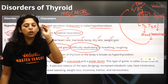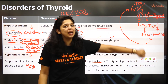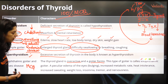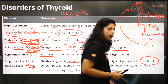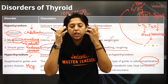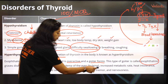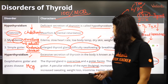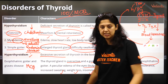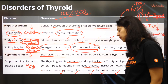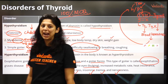The thyroid gland keeps getting stimulated to produce hormones, but it cannot because there is no iodine. This type of goiter is also called exophthalmic because behind the eyes there is periorbital edema and fat deposition, so the eyes kind of bulge outside. Symptoms include: peculiar bulging of the eyes, increased metabolic rate, heat intolerance, increased sweating, weight loss, insomnia, tremor, and nervousness. These are the hallmark features of exophthalmic goiter and Graves disease.